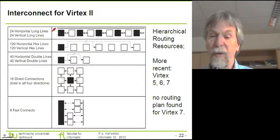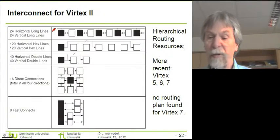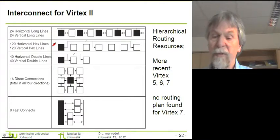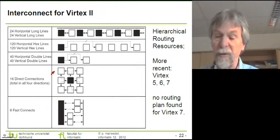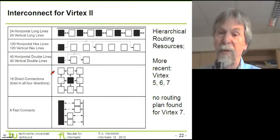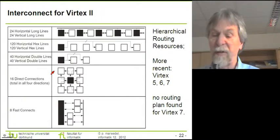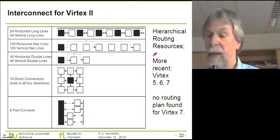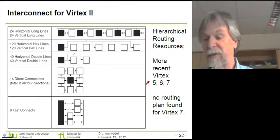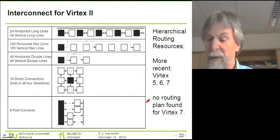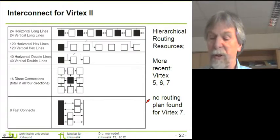For example, the rather early Vertex 2 devices from Xilinx allowed so-called hierarchical routing resources. We have certain lines that run over a significant portion of the chip, so-called hex lines which run only over a limited portion, and then double lines which run over an even shorter distance, and direct connections to the neighbors. In this way we are able to connect these CLBs to each other, and the way in which they are connected is part of the configuration. For the structure of CLBs I will be referring to the Vertex 7 devices.